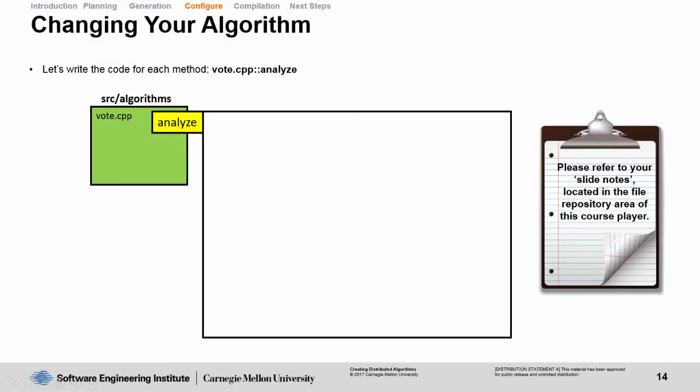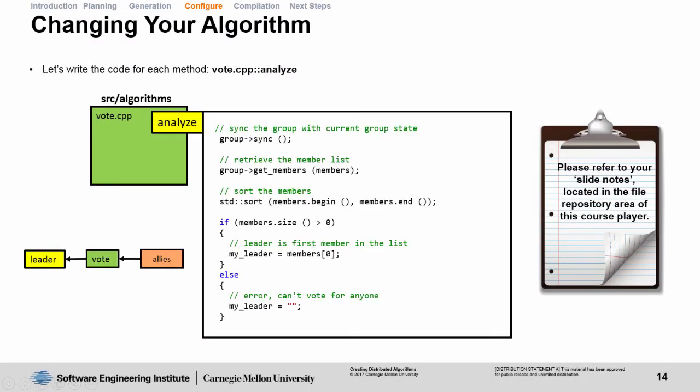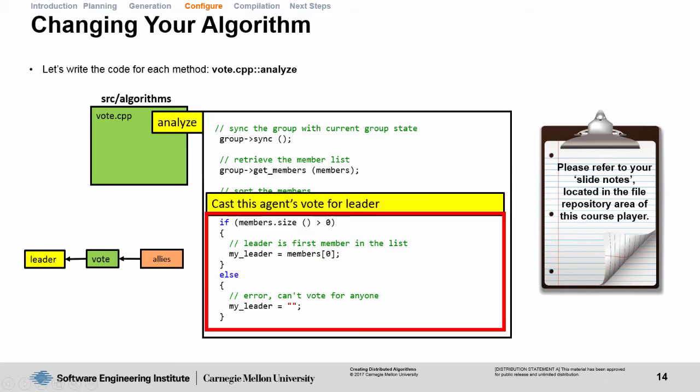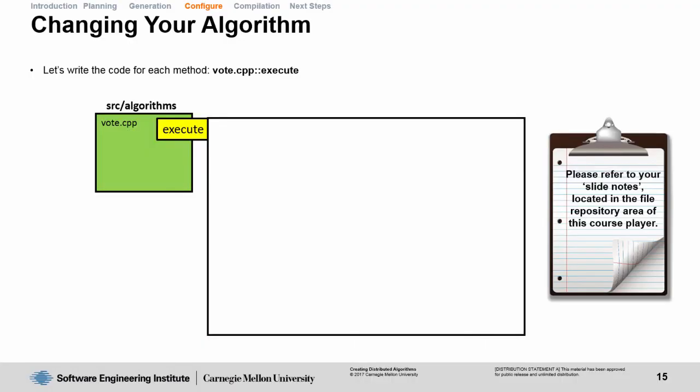Next, let's modify the analyze method inside of vote. The first step is going to be sorting the member listing. First, we synchronize the group with whatever changes have been made to the group, including adding new members or removing them. Then, we get the member list into our members variable, and we sort this list in ascending order. Next, we cast our vote for who should be leader by looking at the lowest ranked member in the group member list. If you remember from the planning stages of this algorithm, we only implemented analyze and execute. We left plan exactly as it was.